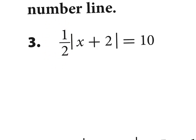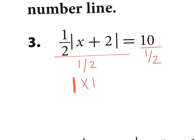So if I can't distribute, I can divide by one-half. Dividing both sides by one-half — what is 10 divided by one-half? It is 20. To understand that mathematically, think about how many 50 cents you could get out of $10 — you could get 20. So now I have the absolute value of x plus 2 equals 20.